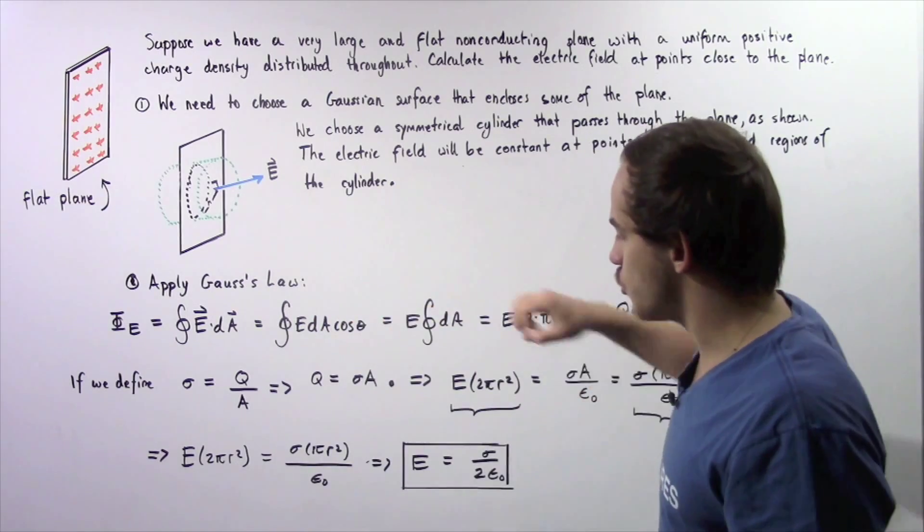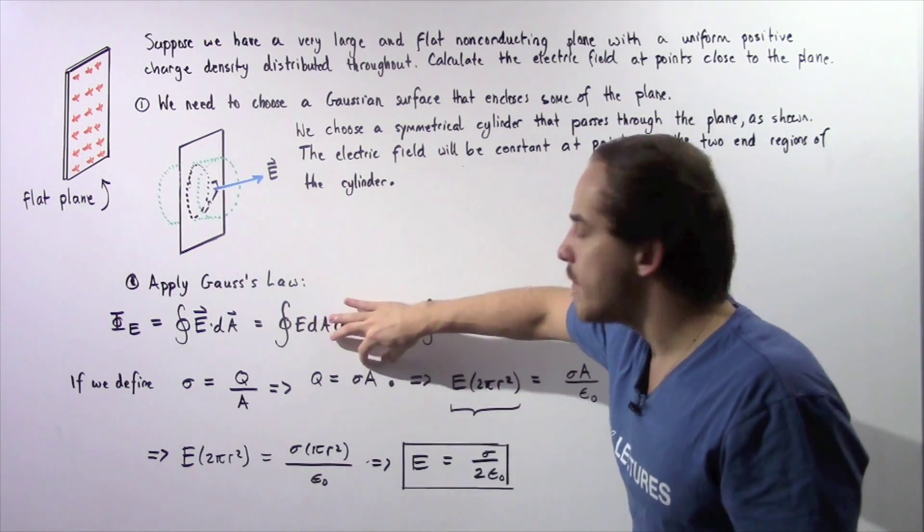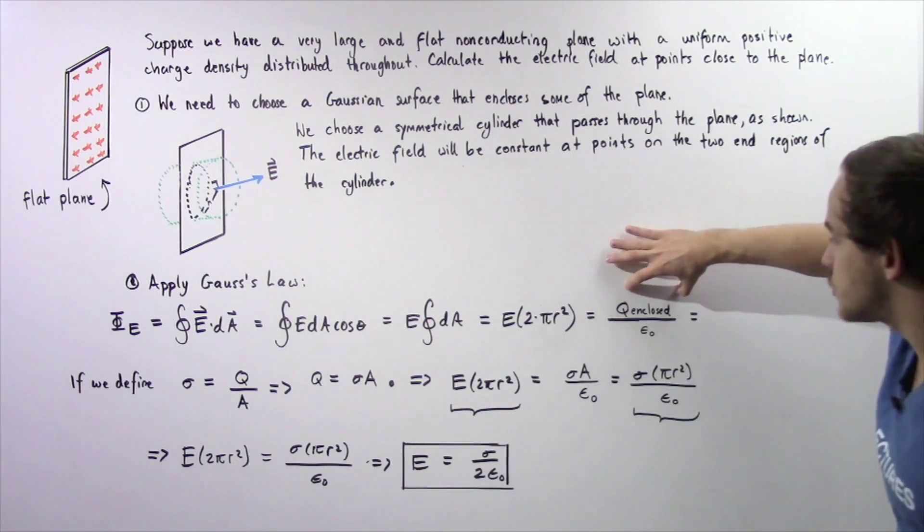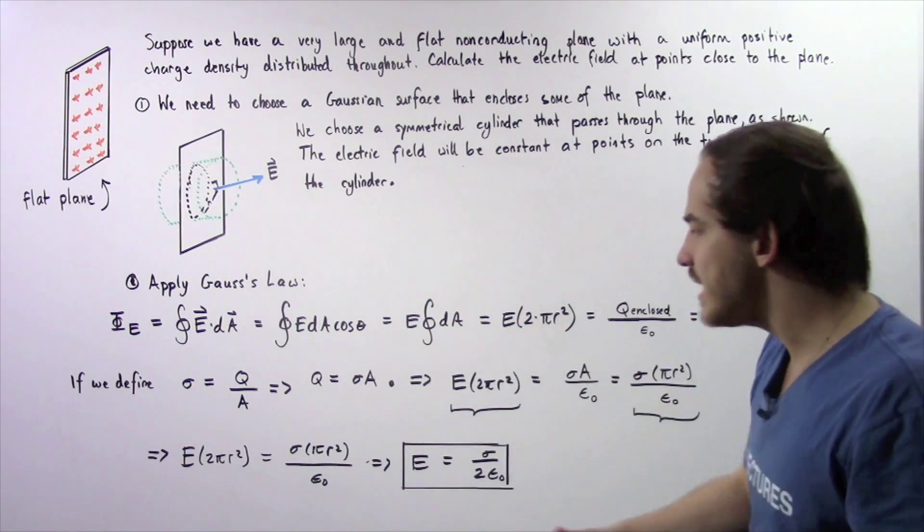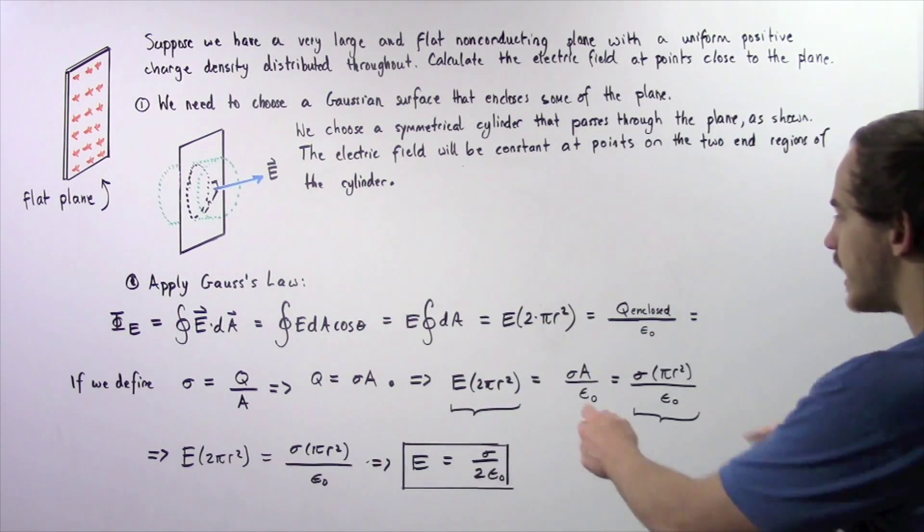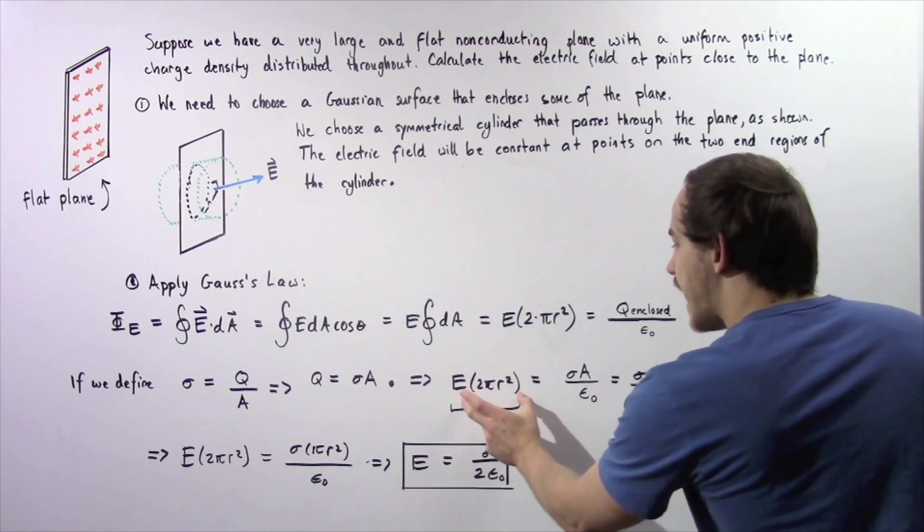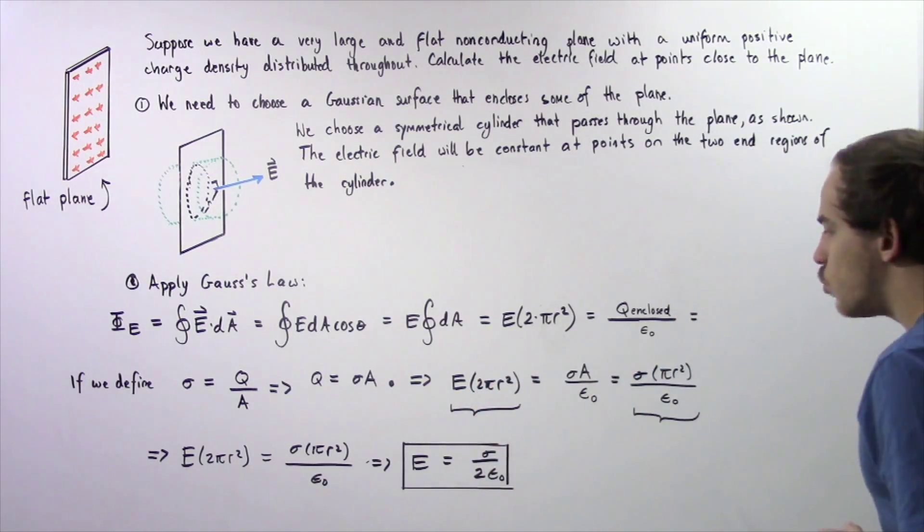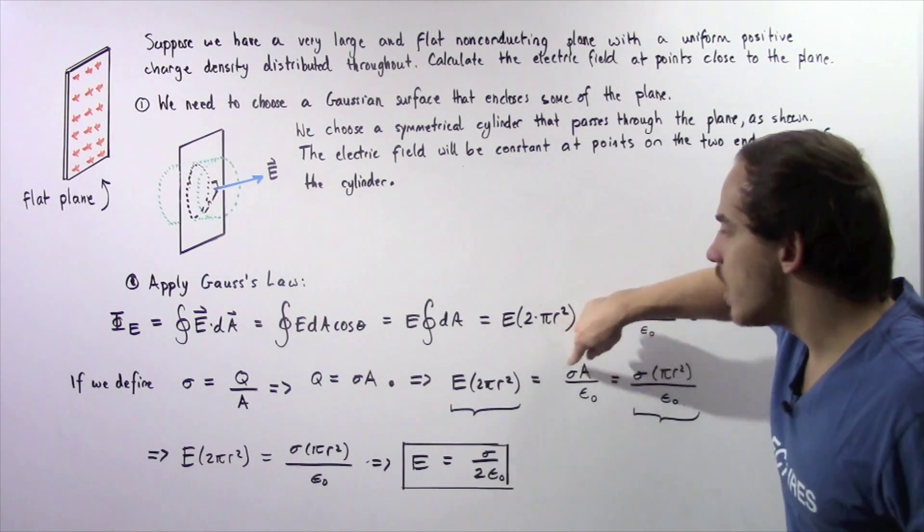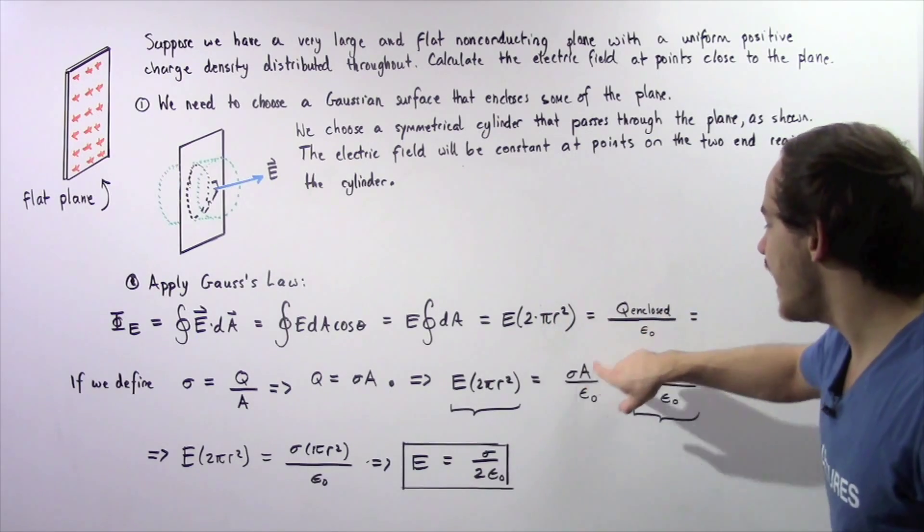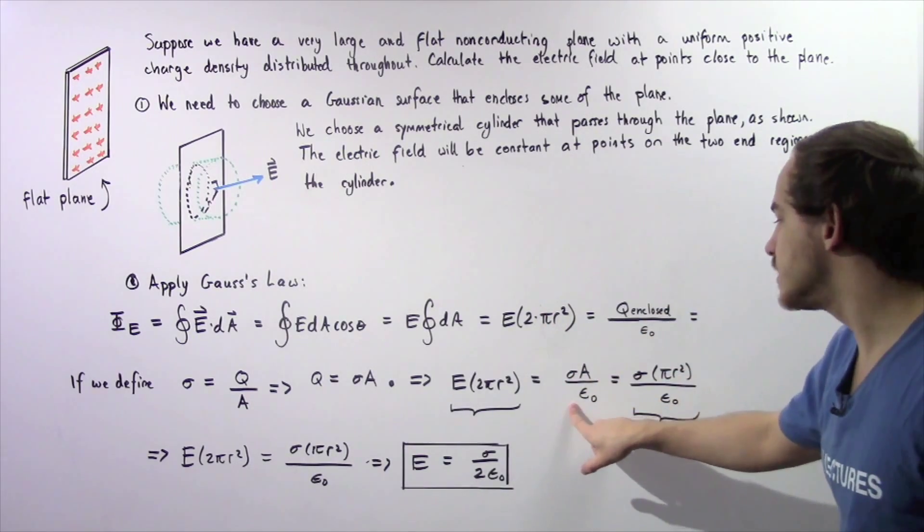We simply take this Q enclosed and we replace it with the product of the density and the area. We get that our product of electric field and the surface area 2 pi r squared is equal to the product of our charge density sigma multiplied by A divided by epsilon naught.